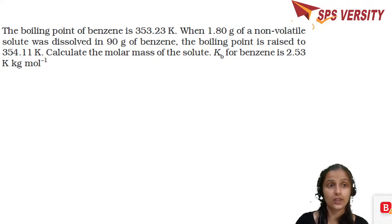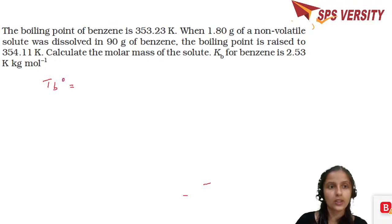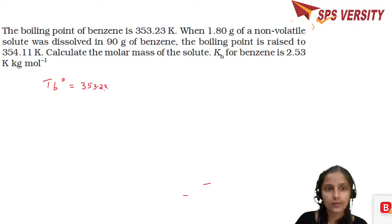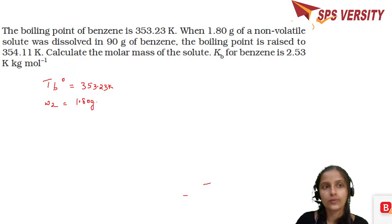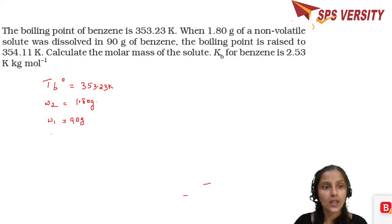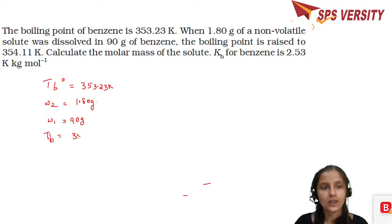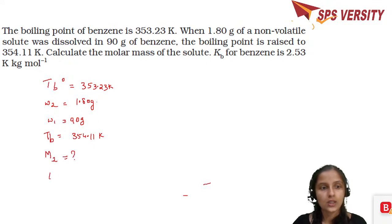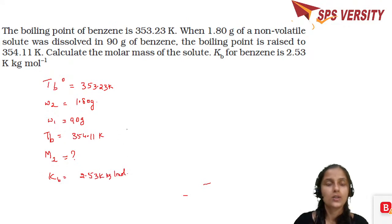Problem: the boiling point of pure benzene is Tb° = 353.23 K. When 1.80 g of a non-volatile solute (w2 = 1.80 g) is added to 90 g of benzene (w1 = 90 g), the boiling point rises to Tb = 354.11 K. The molar elevation constant Kb for benzene is 2.53 K·kg/mol. Calculate the molar mass of the solute.